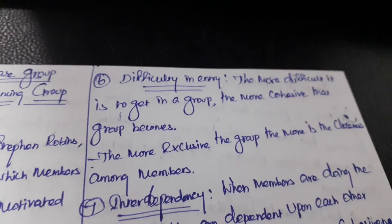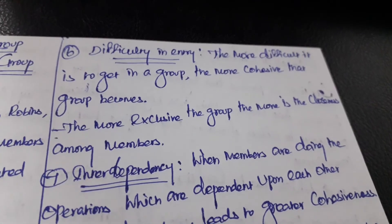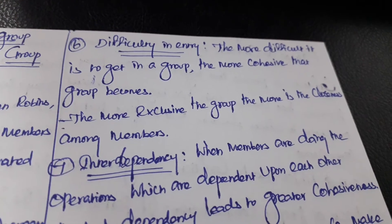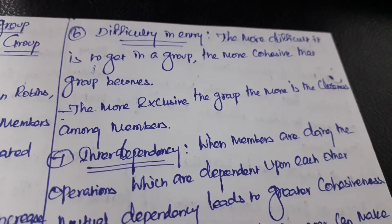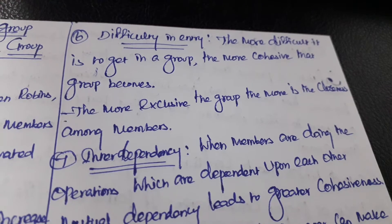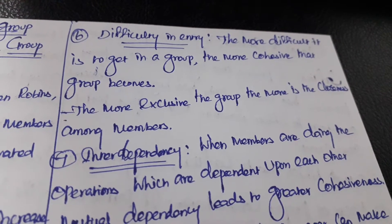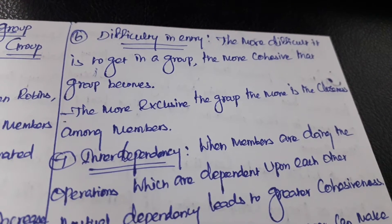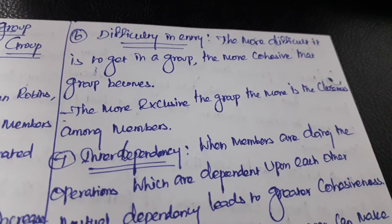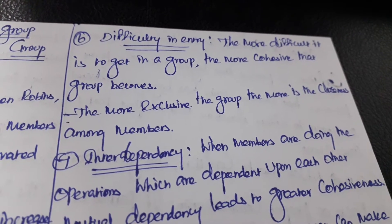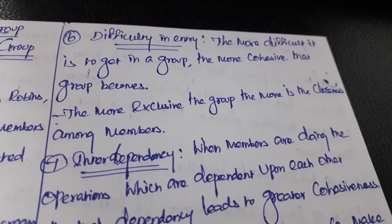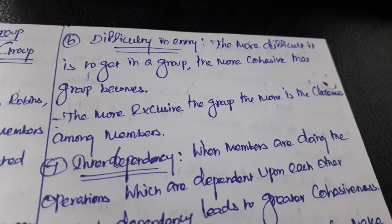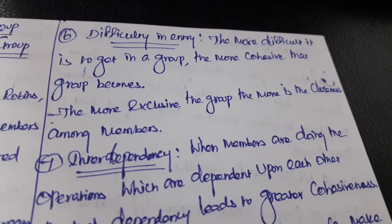The next factor is difficulty of entry. The more difficult it is to get into a group, the more cohesive that group becomes. The more exclusive the group, the greater the cohesiveness among its members, as external individuals cannot easily enter the group.